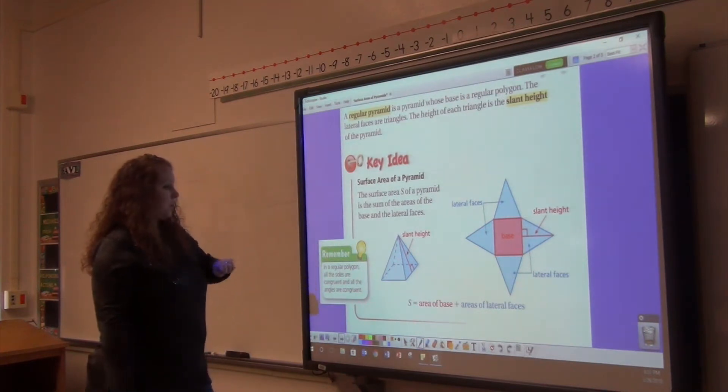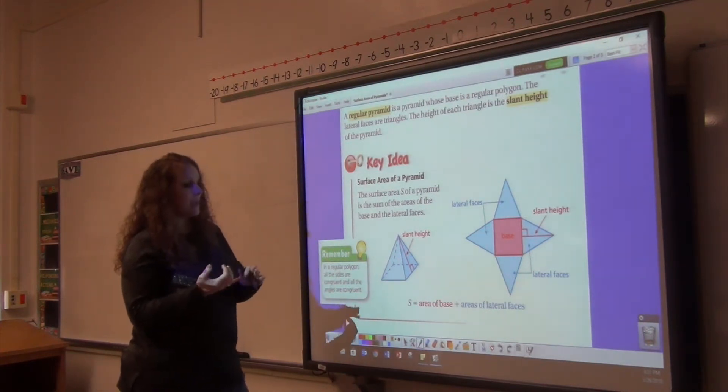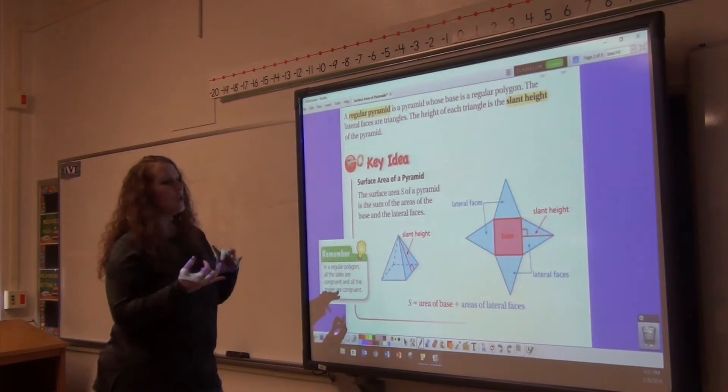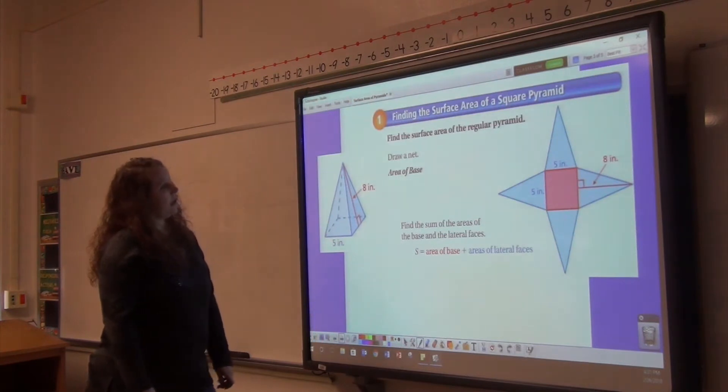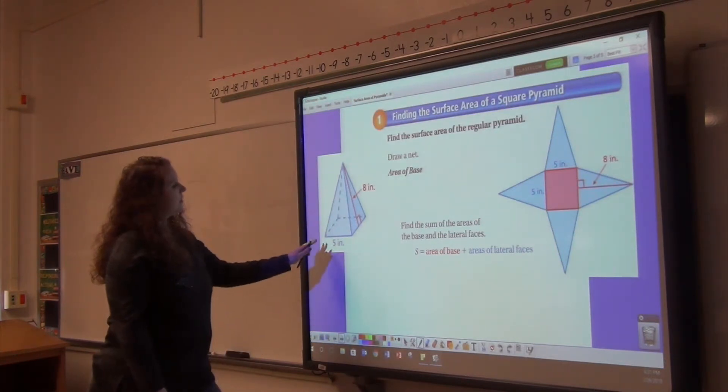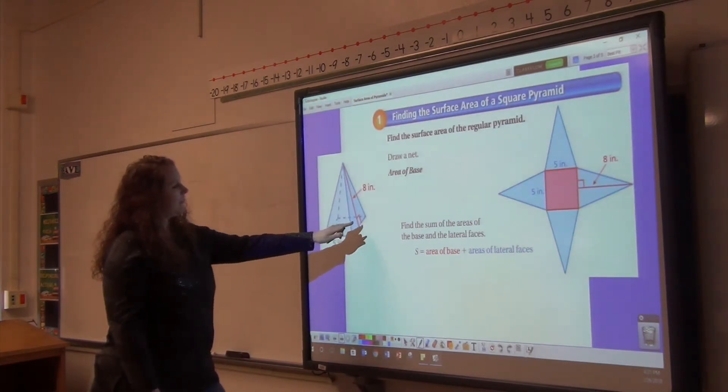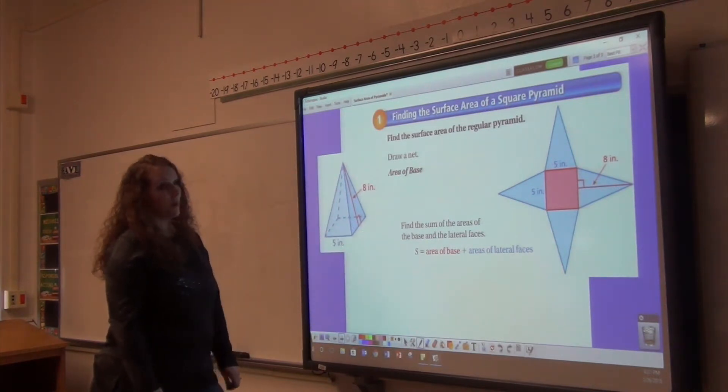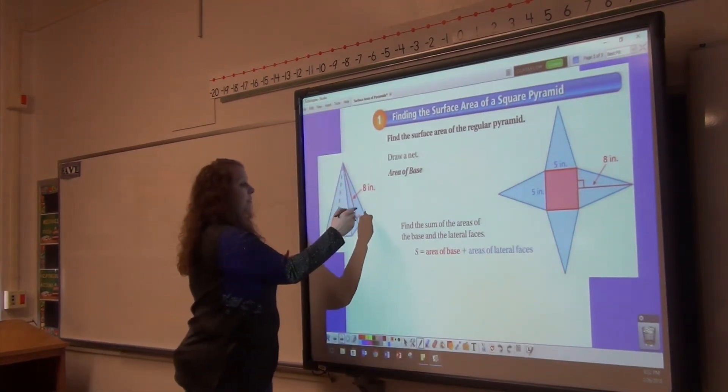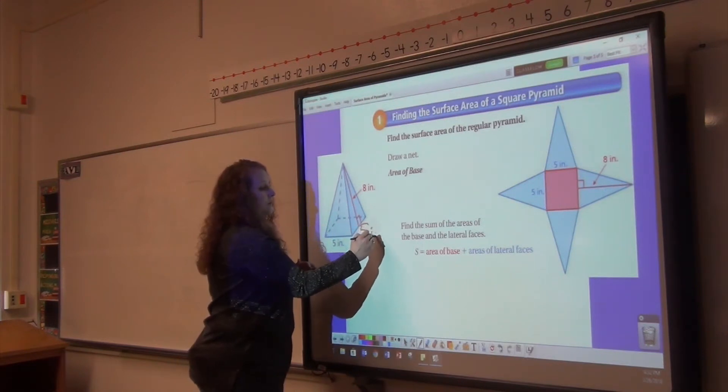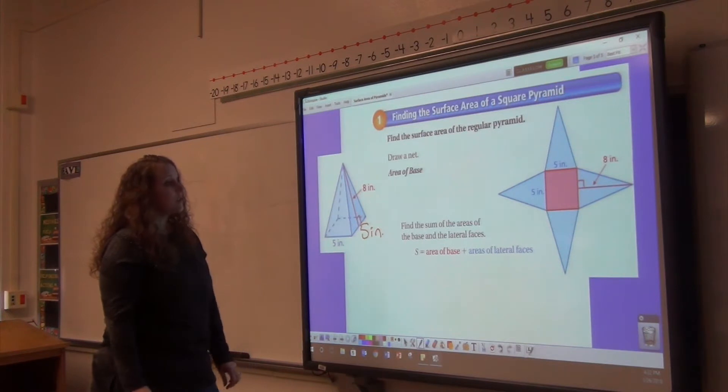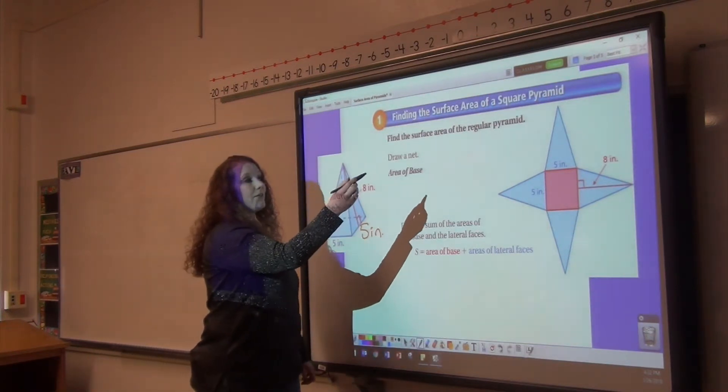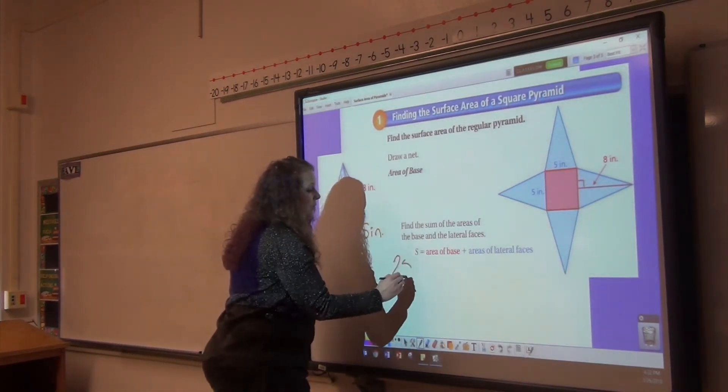So you add the area of the base to the area of all of the faces. We have five inch by five inches, because it says that this is a regular pyramid, which means that all the base sides are the same. So this is going to be five inches. Our slant height is eight. So the area of our base is five times five, which is 25.